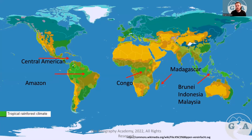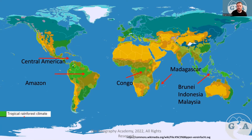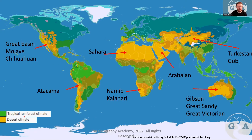In part one we're going to look at locations, as you'll often get a map and need to apply information from this section. Here we can see major areas where we find rainforest: the Congo rainforest in Africa, Madagascar nearby, the area around Indonesia and Malaysia including Borneo, the Central American rainforests, and the very famous Amazon basin.